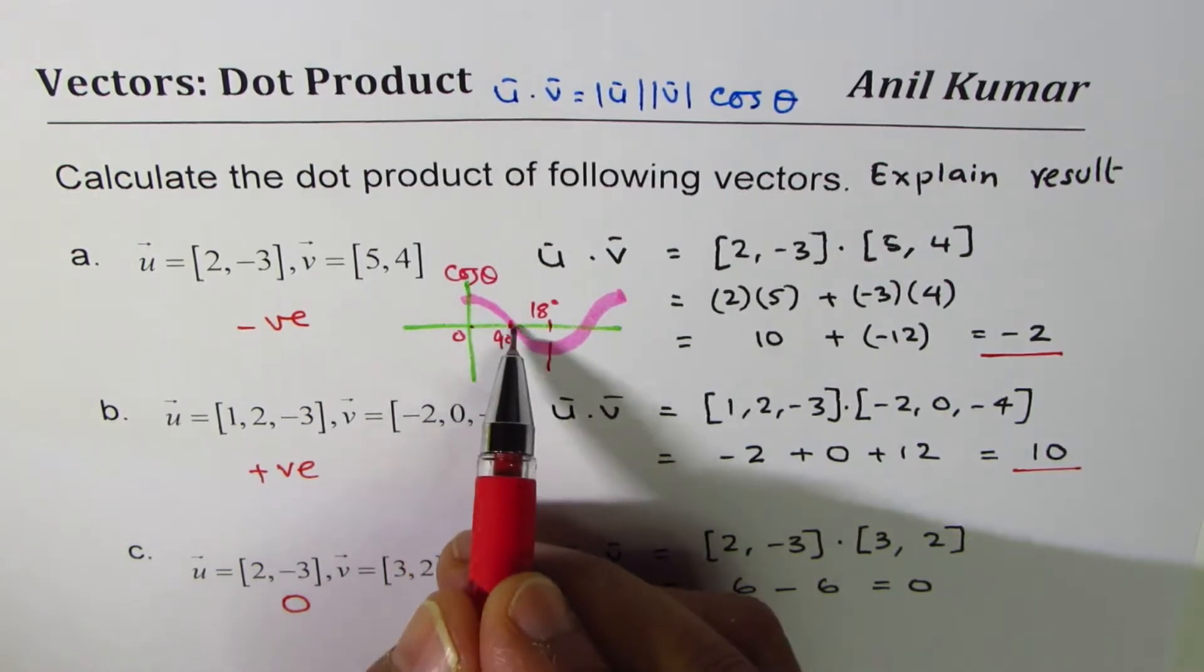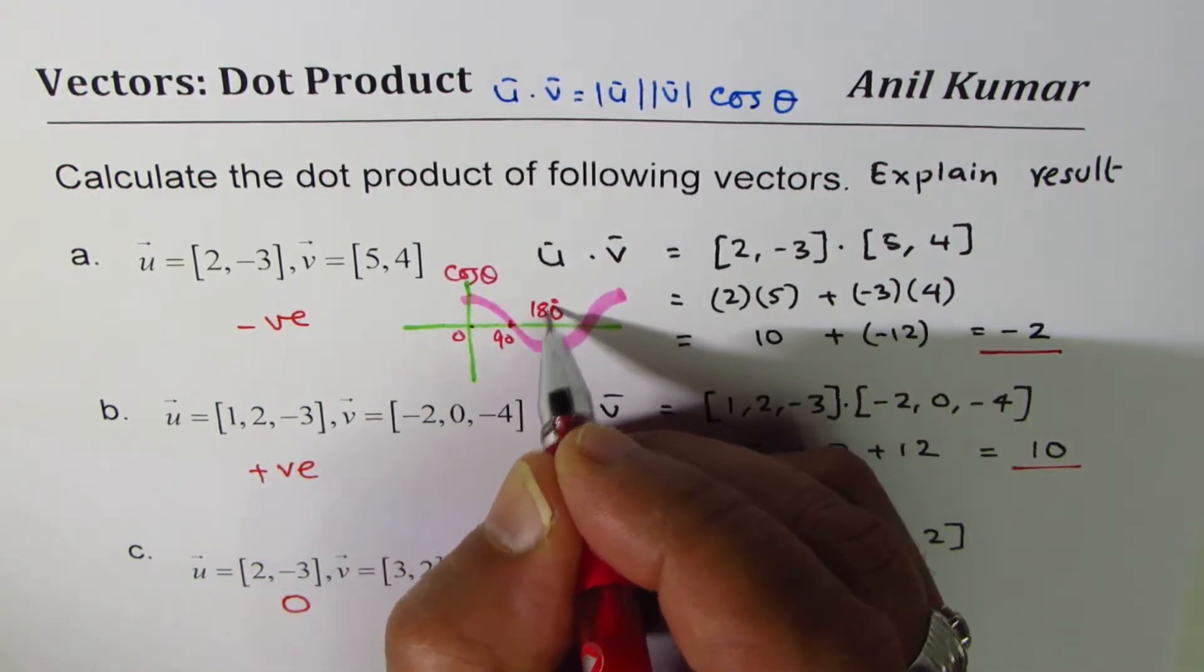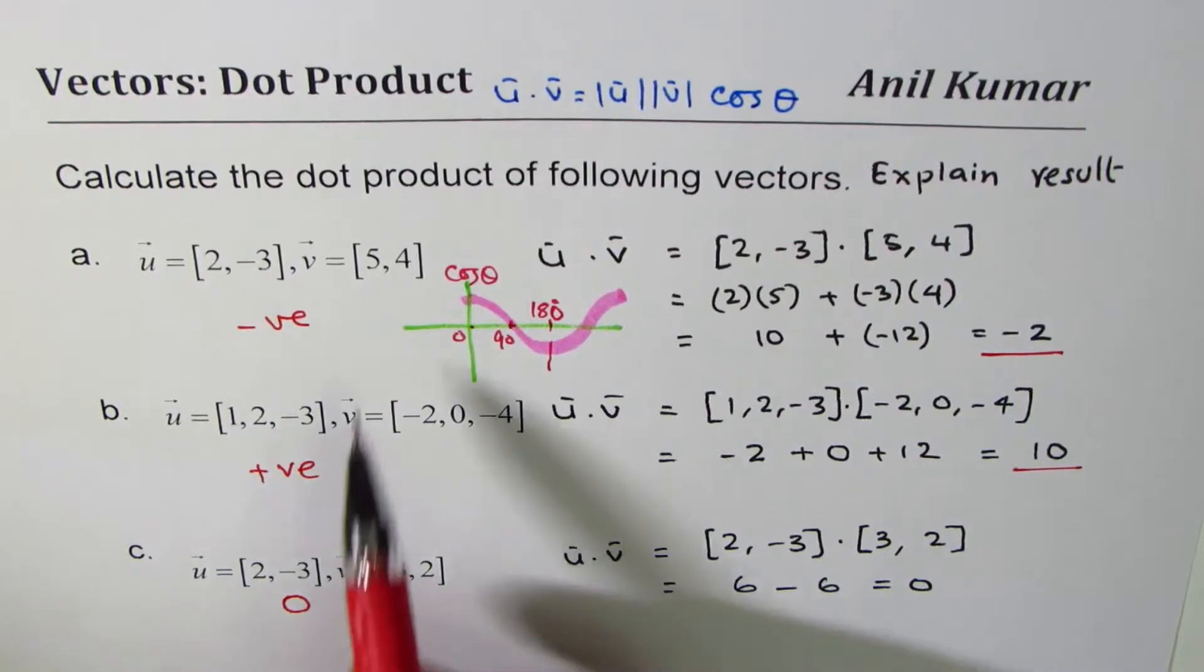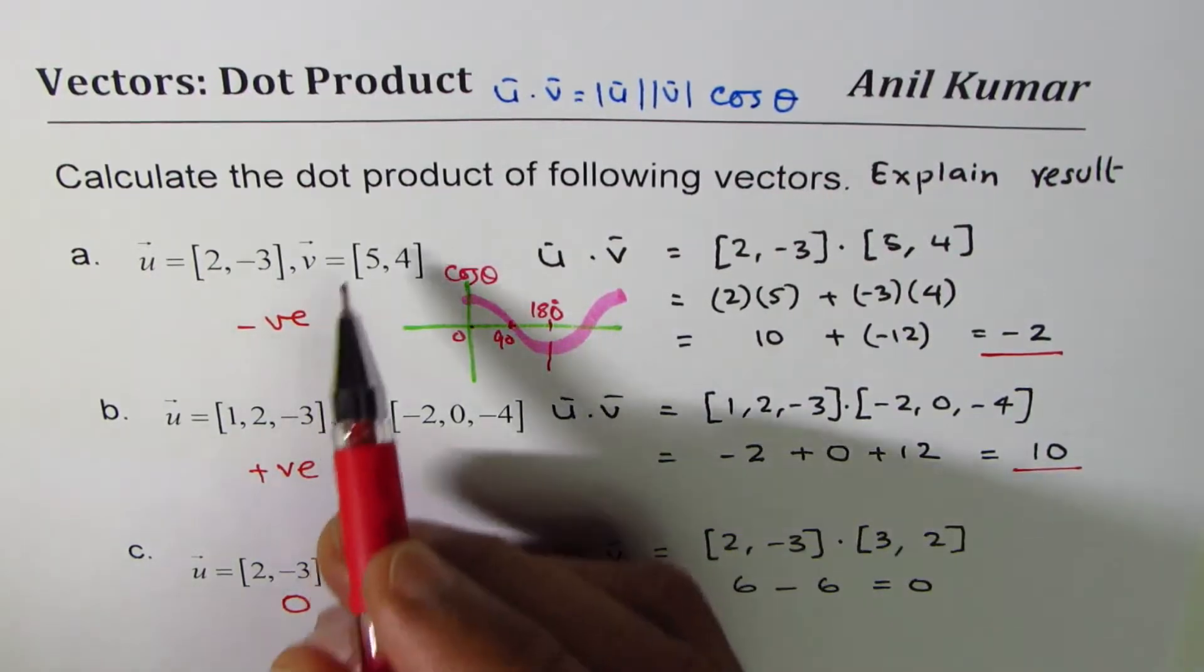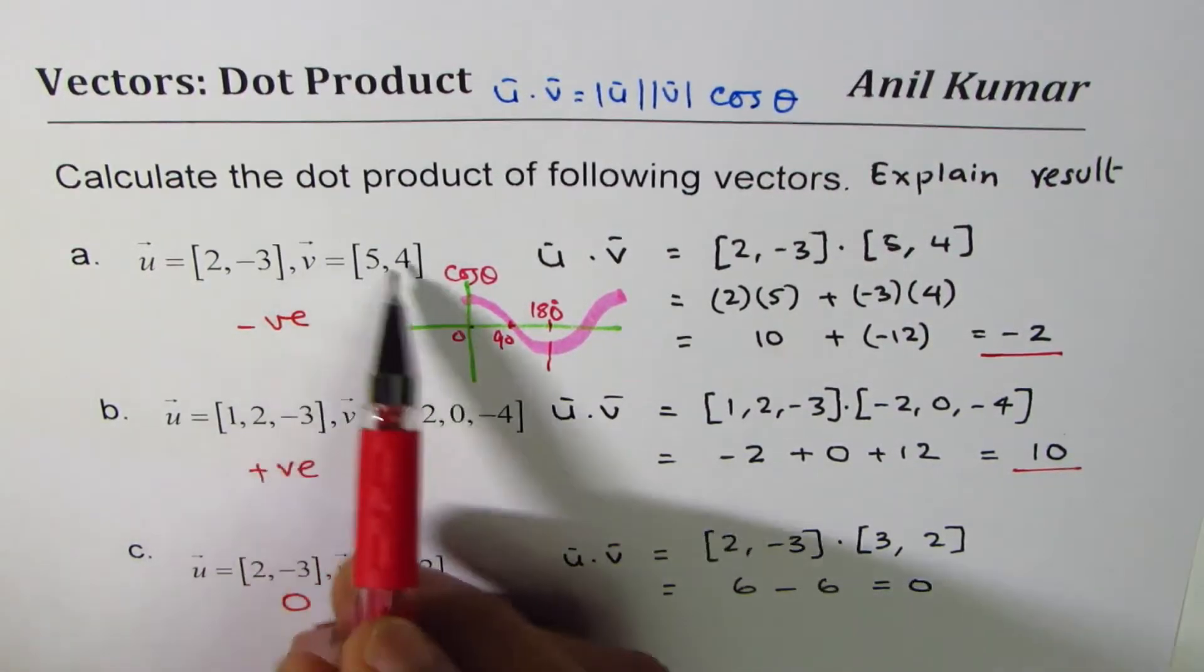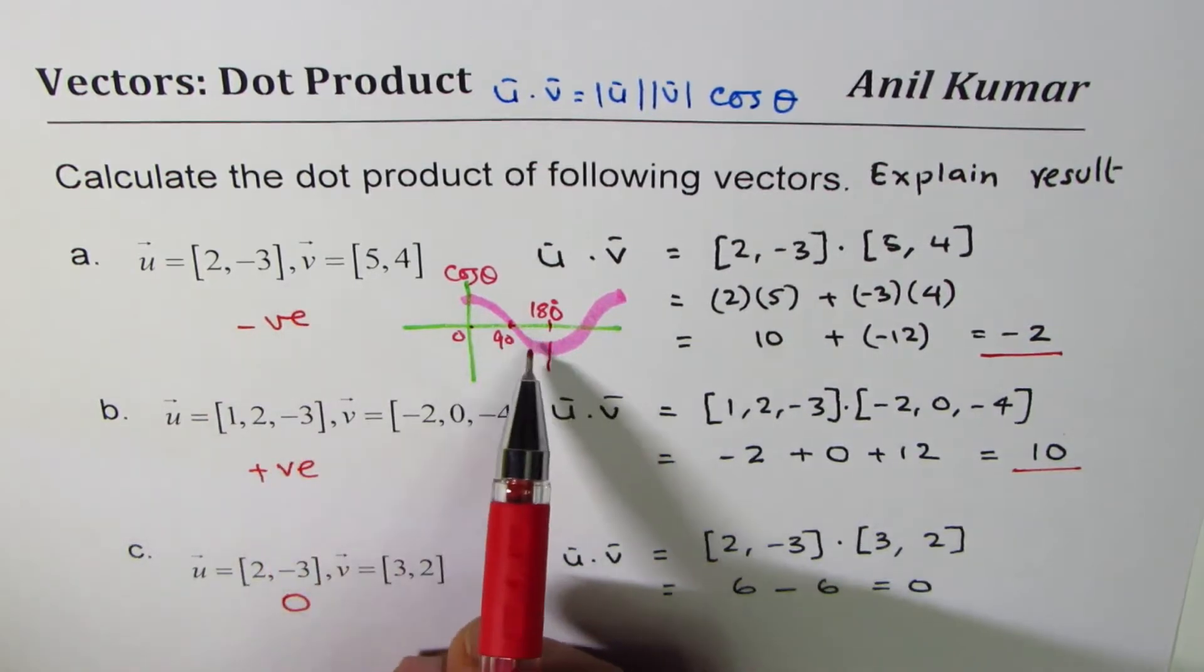If you're considering angle between 0 to 180 degrees, then you see at 90 degrees cosine theta is 0, but before 90 is positive, after 90 is negative. So here it really means that the angle between these two vectors is greater than 90 degrees.